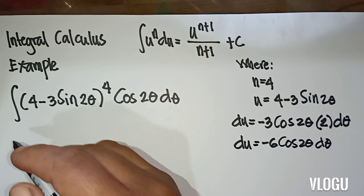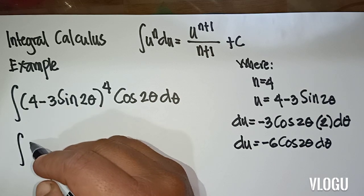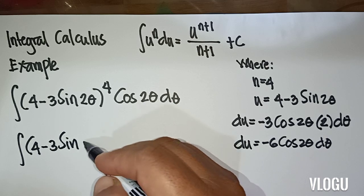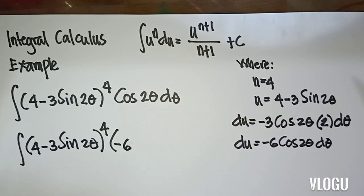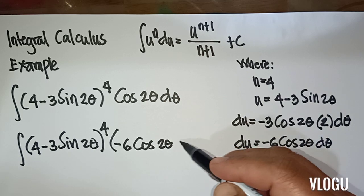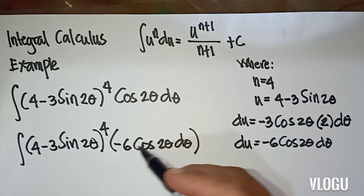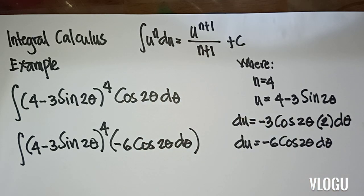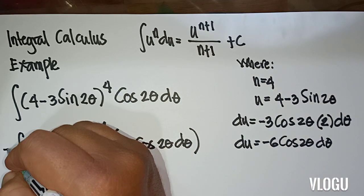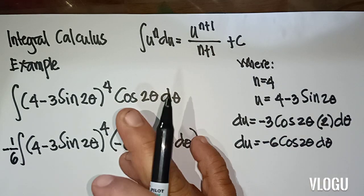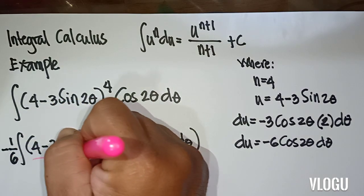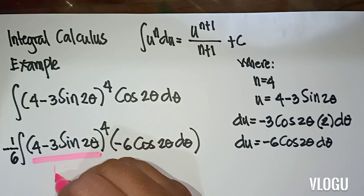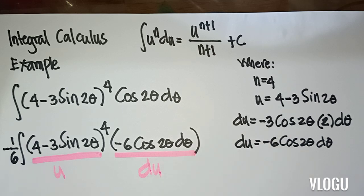So du is equal to negative 6 cosine 2 theta d theta. From that, our du has a factor of negative 6, so we will have (4 minus 3 sine 2 theta) to the 4 — and du equals negative 6 cosine 2 theta d theta. We multiply negative 1 over 6, because negative 6 times negative 1 over 6 equals 1. We can now identify this as our u, and this as our du.